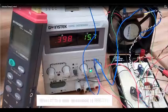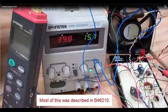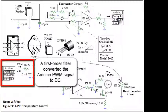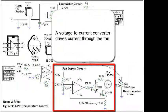A previous video provides more hardware details. For this project, a voltage divider was used to reduce the Arduino input voltage to a maximum of 5 volts DC. A first-order filter converted the Arduino pulse width modulation signal to DC. A non-inverting amplifier provided a gain of 2. A voltage to current converter drives current through the fan. An Arduino PID program provides temperature control.